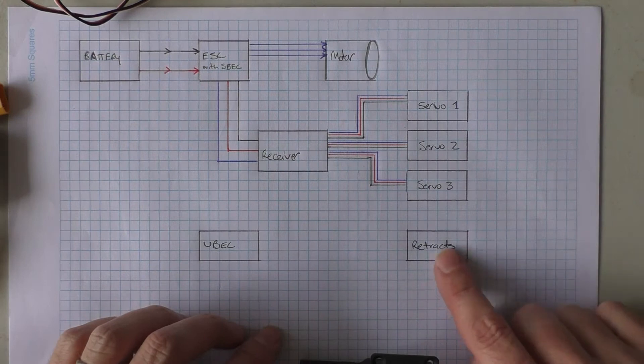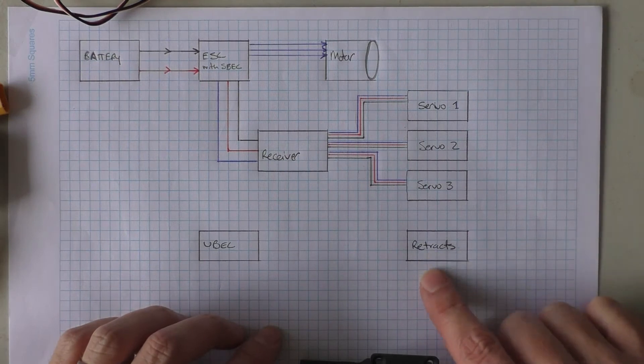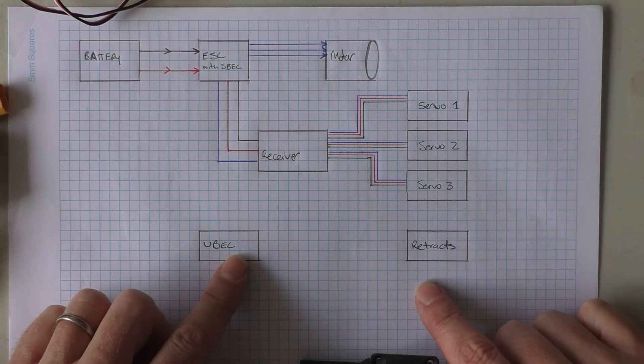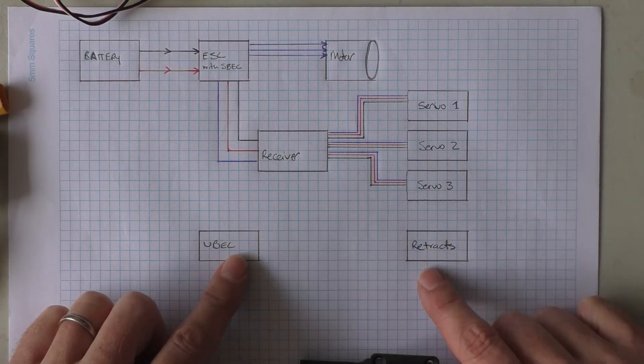The other thing, you can also add your flaps. You can also do retracts and flaps off the UBEC. That's another very common way of doing it. So let me show you how to wire that up.